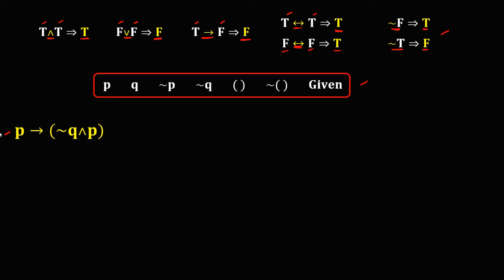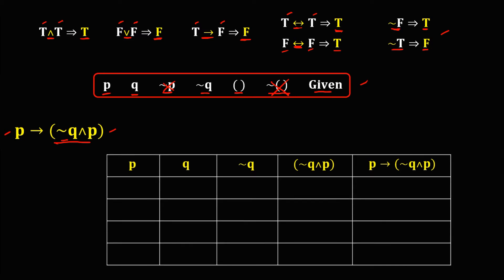For this given, to construct a truth table, again start your table with the given variables — that's P then Q, then followed by the negation of P. Since in this given there is no negation of P, just ignore it. Then we have the negation of Q. Since there's no negation of parentheses, ignore that too. The last column must be the given. Since this equation has two variables, this table has four rows.